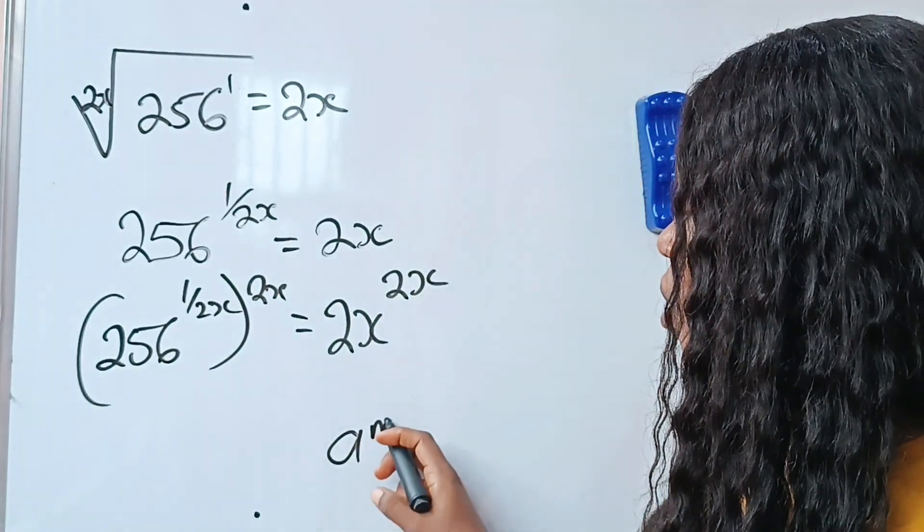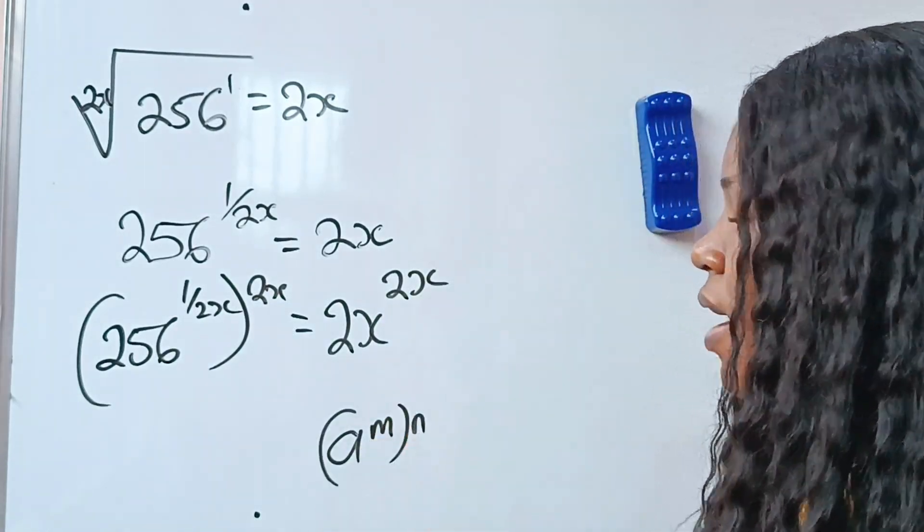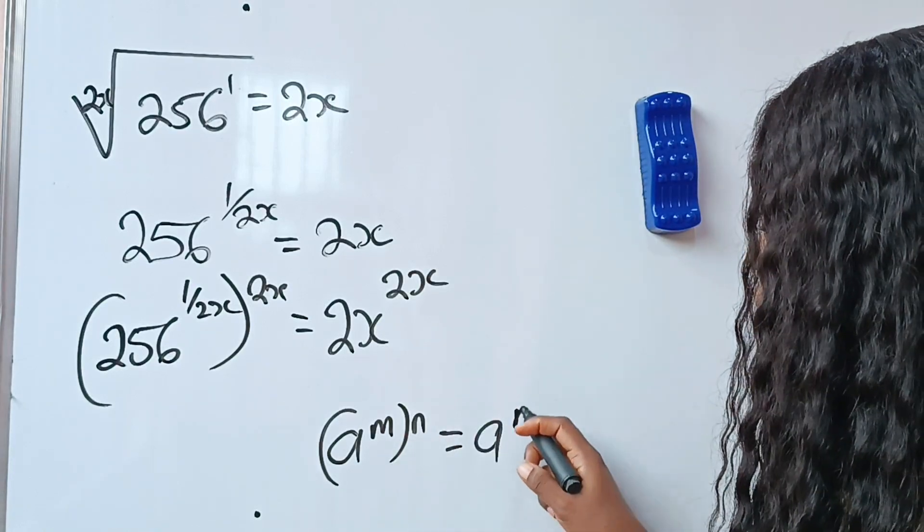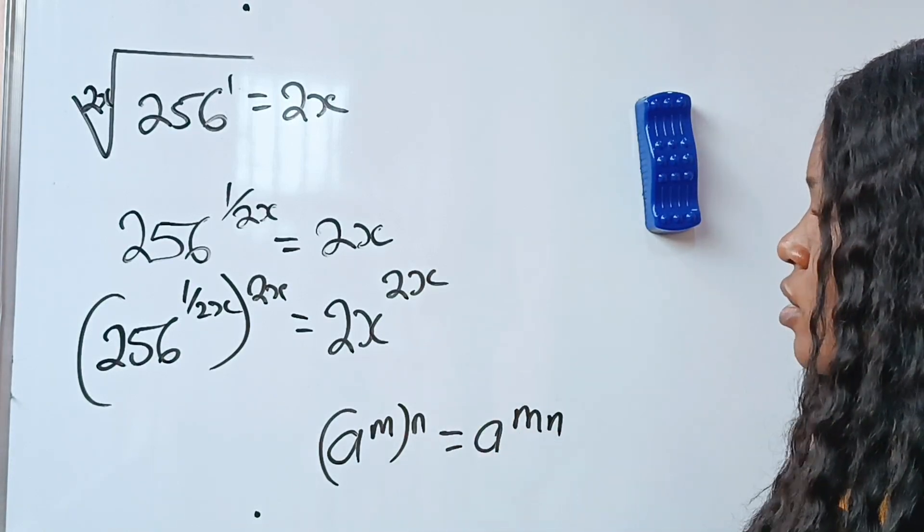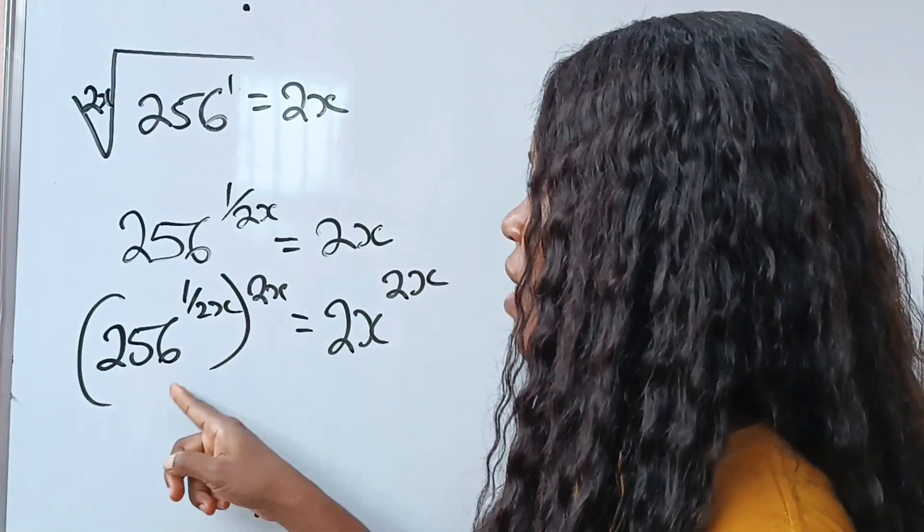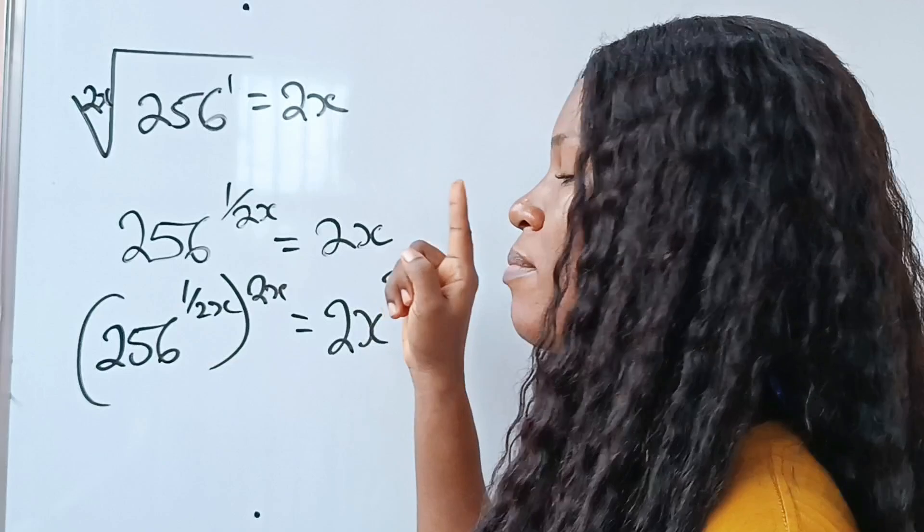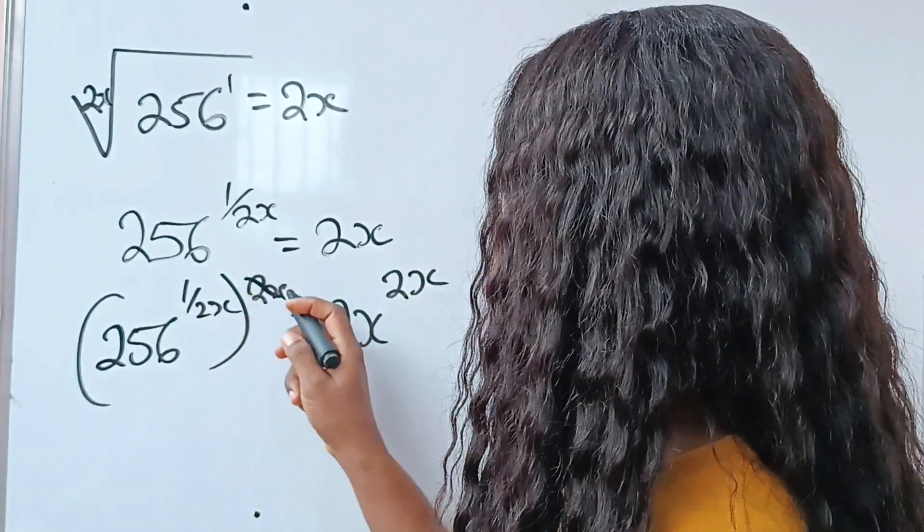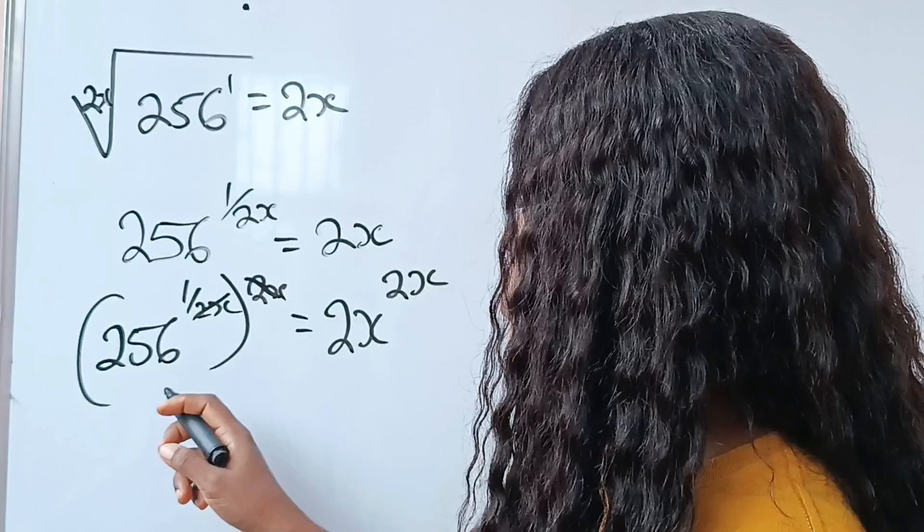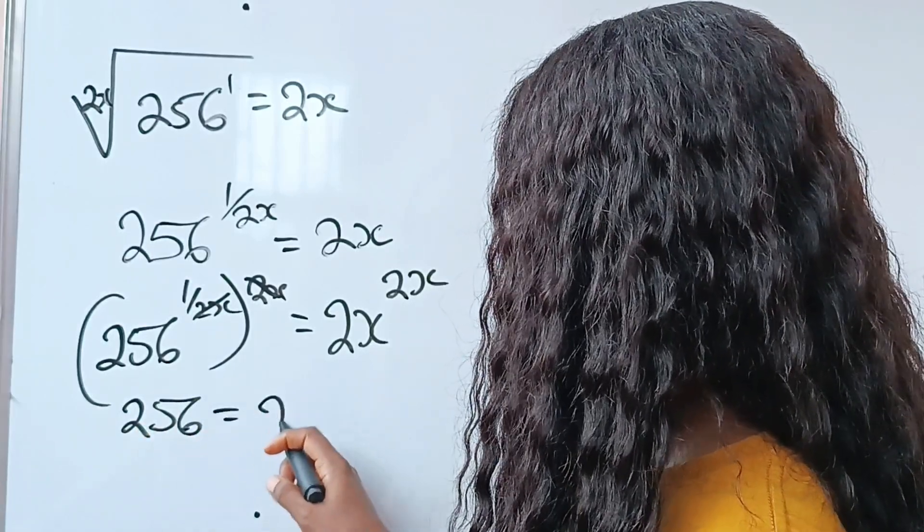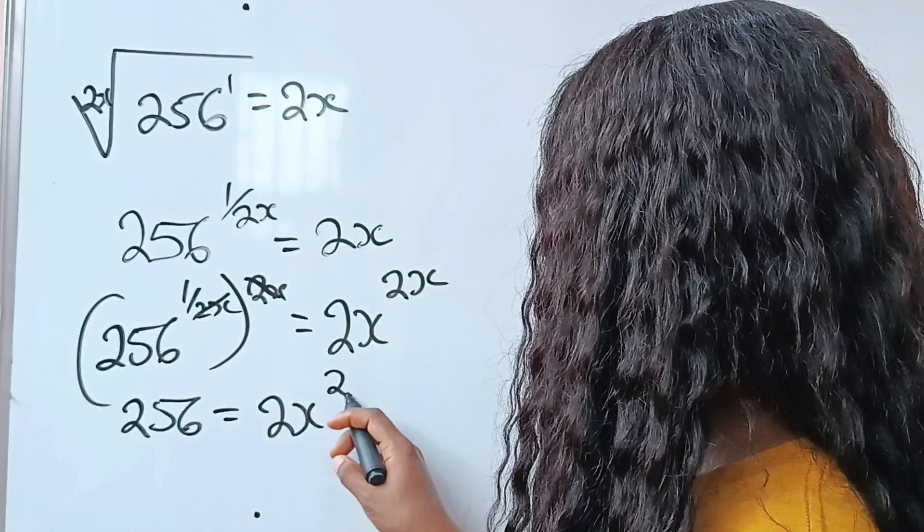Now, when you have a to the power of m raised to the power of n, this is the same as a to the power of m times n, which is mn. So we are going to apply that here. That means this is 256 to the power of 1 over 2x multiplied by 2x. And when 1 over 2x is multiplied by 2x, this 2x will divide this 2x, and we have that 256 is equal to 2x to the power of 2x.